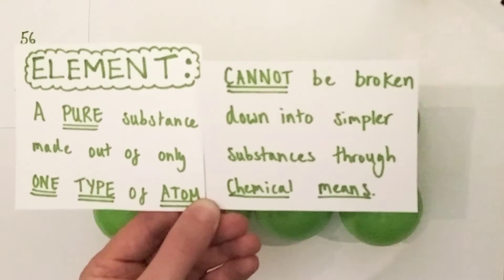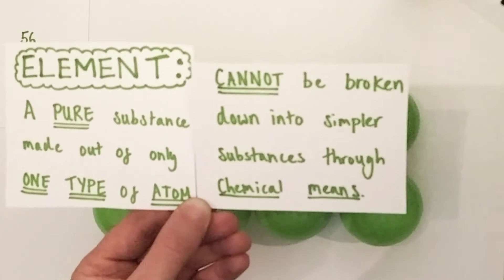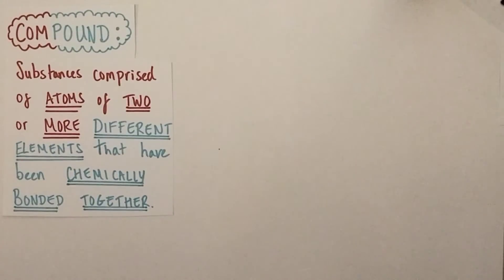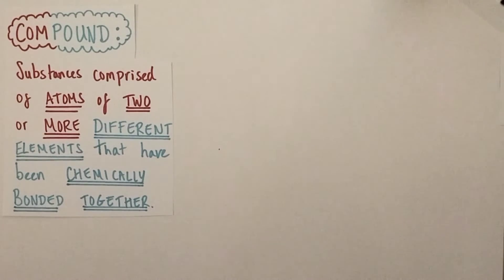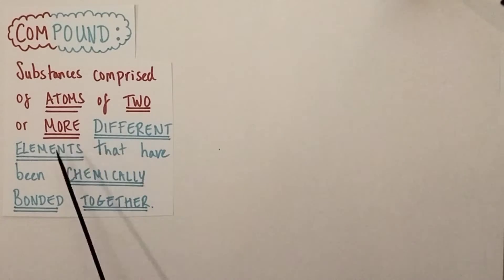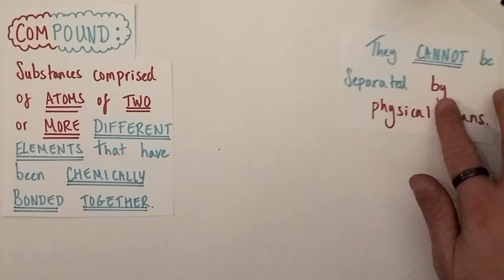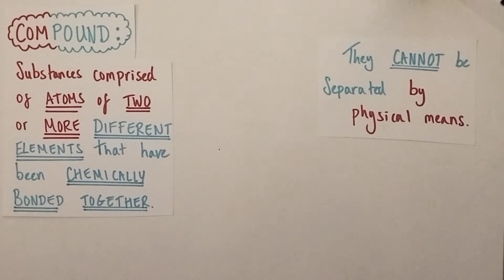We're now going to look at how compounds differ from elemental structures. Compounds are substances comprised of atoms of two or more different elements that have been chemically bonded together, and they cannot be separated by physical means.